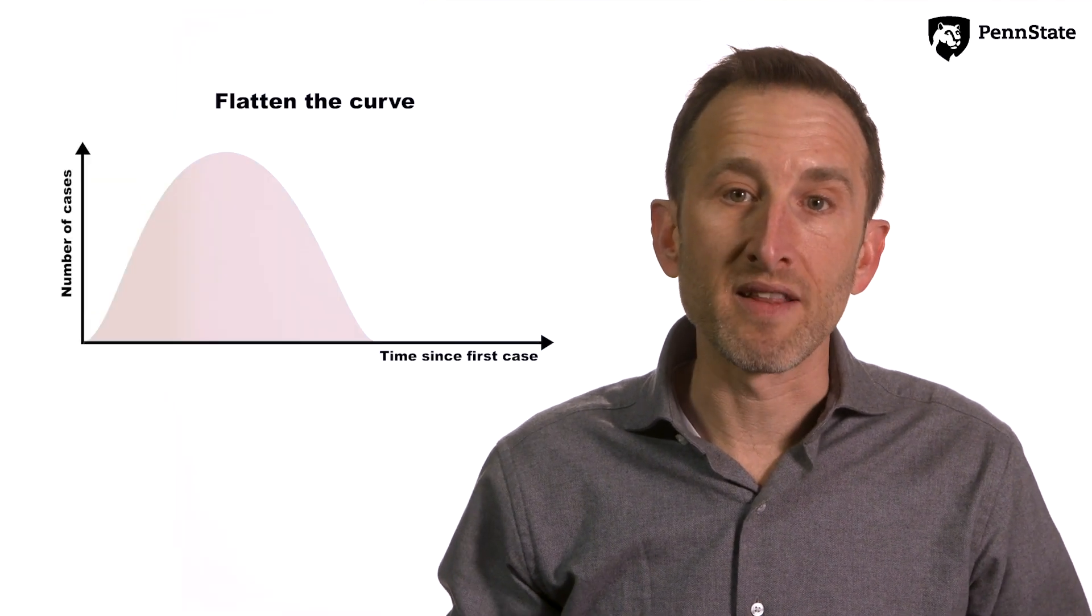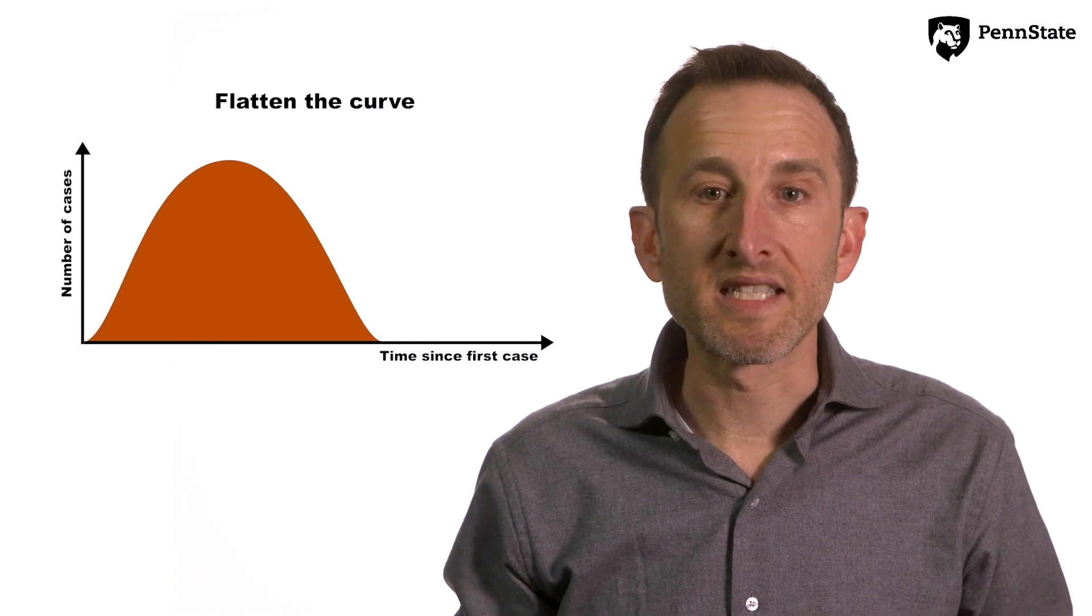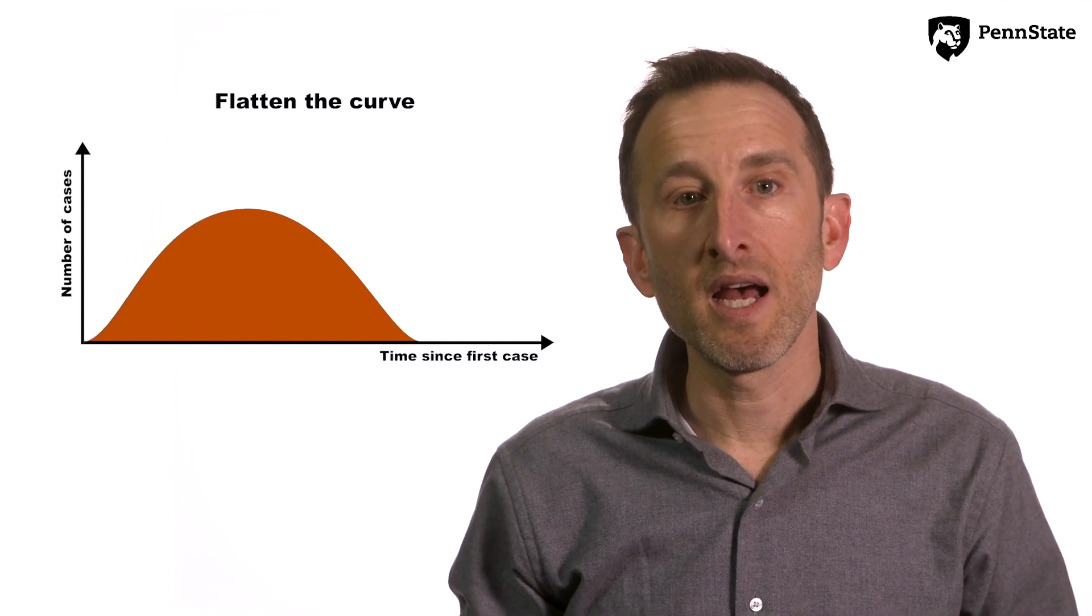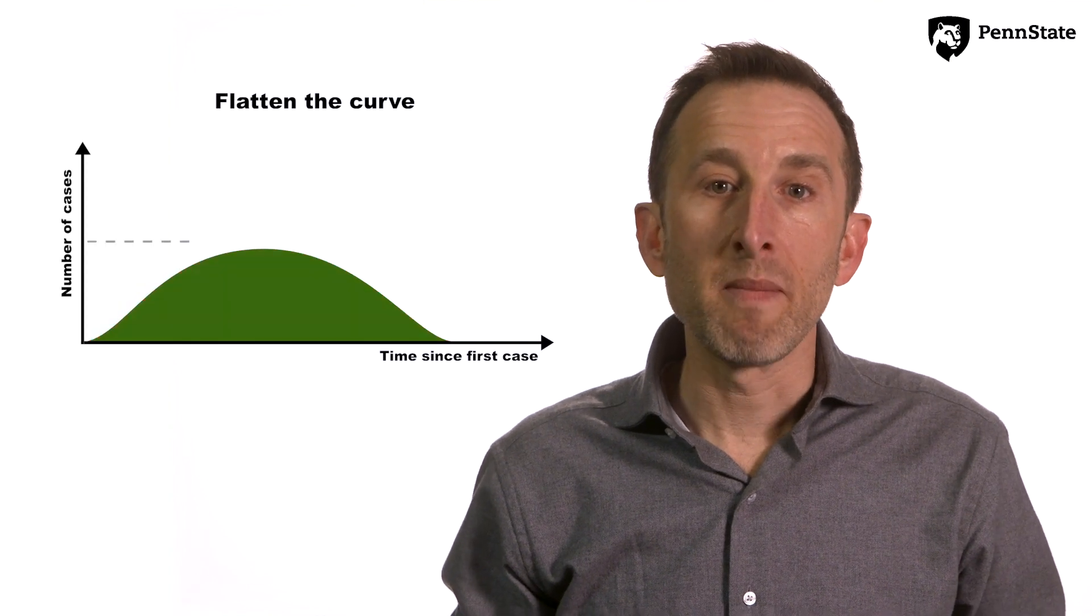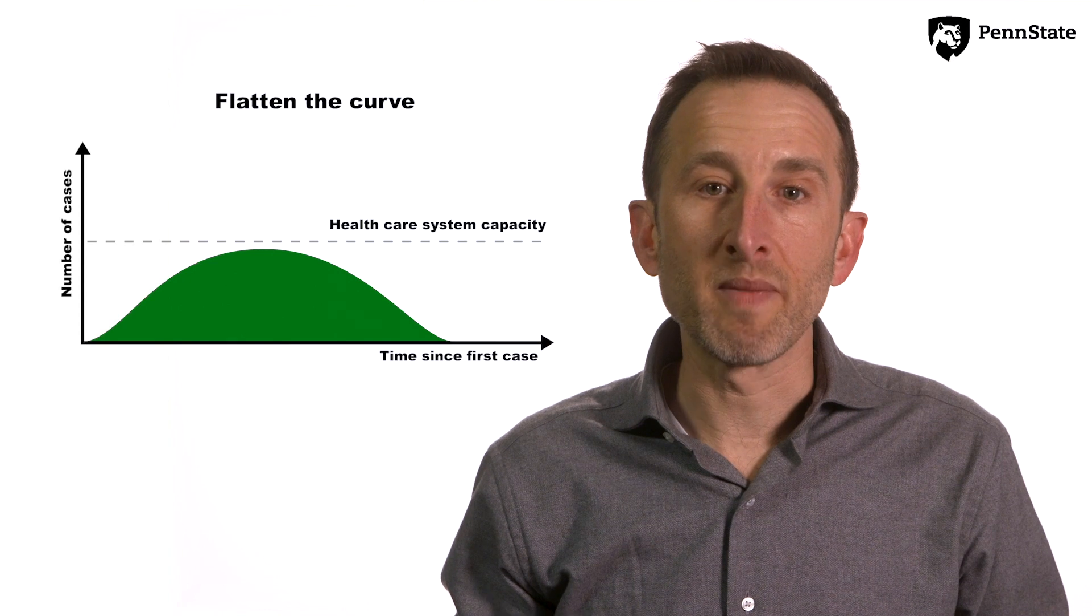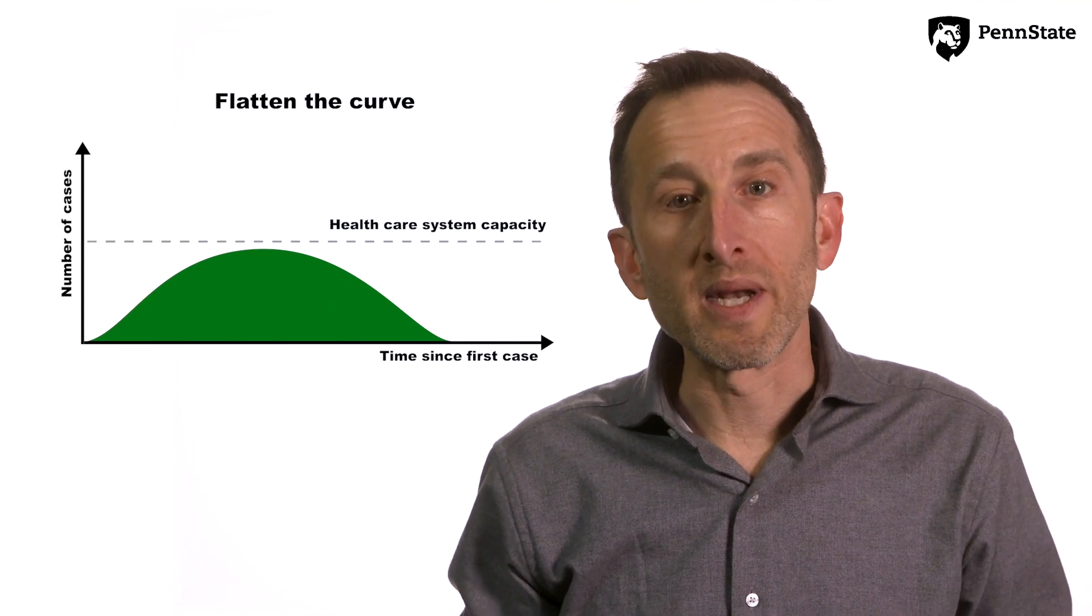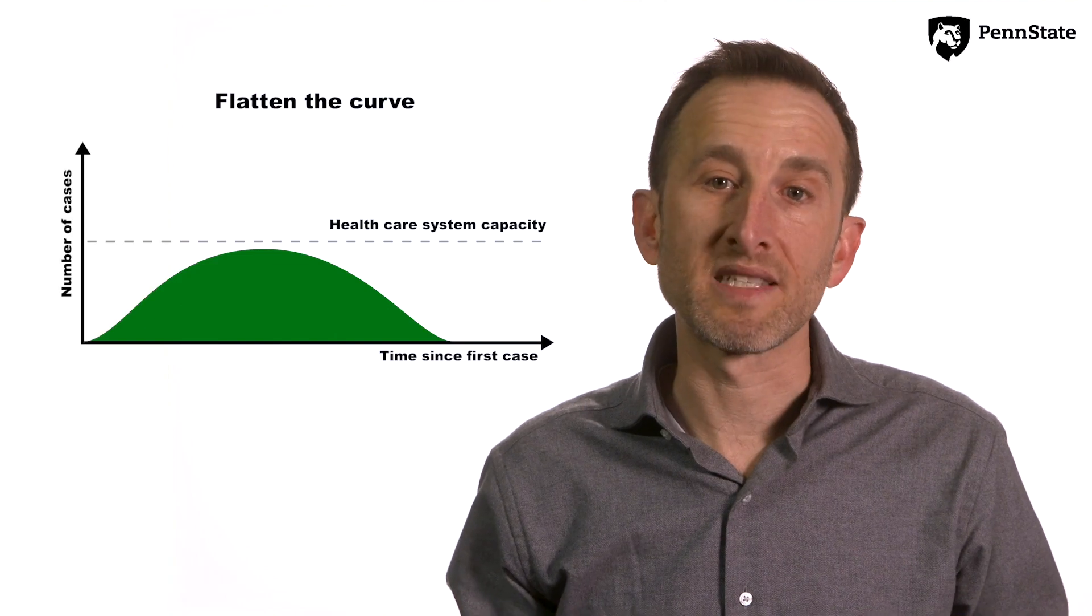This concept, which we call flattening the curve, helps us to keep the outbreak from growing too quickly and exceeding healthcare capacity. Severe and critical cases may need ventilators or ICUs. This outbreak is increasing demand for those services beyond what we anticipated a few months ago, and we need to buy time to ramp up capacity.